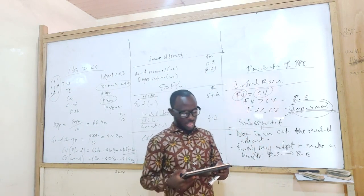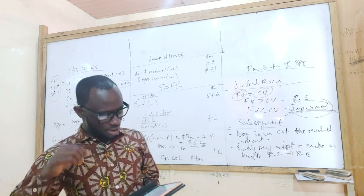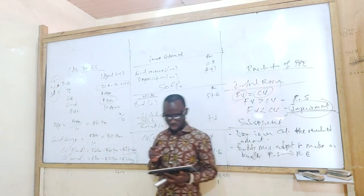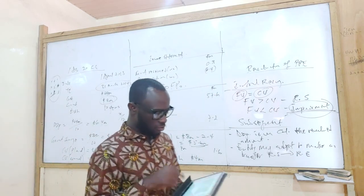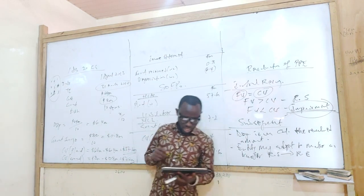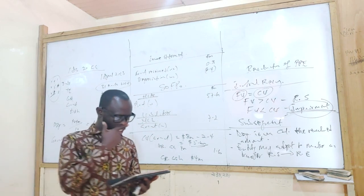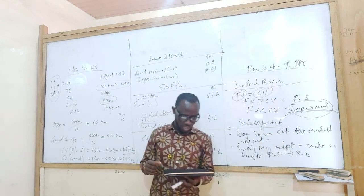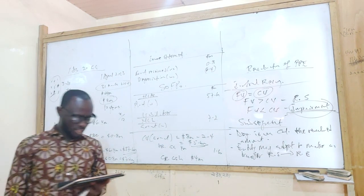On 1st April 2012, which is the beginning of the year, they revalued their assets to 160 and 112. Based on that, they revised their remaining useful life to 5 and 5 years.